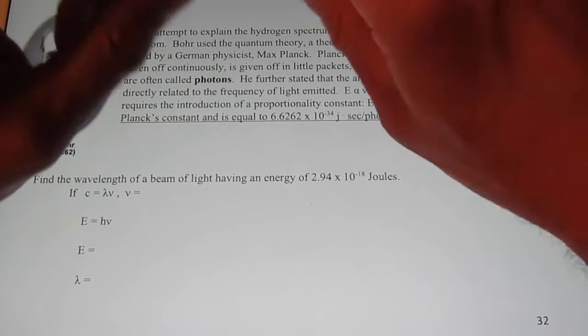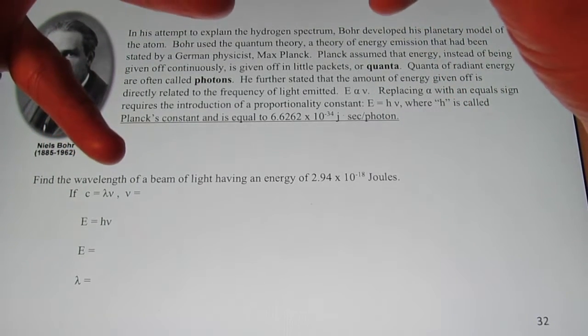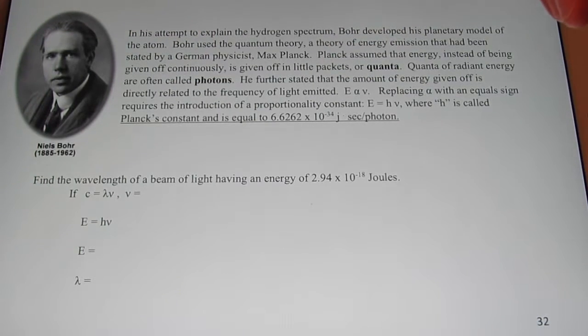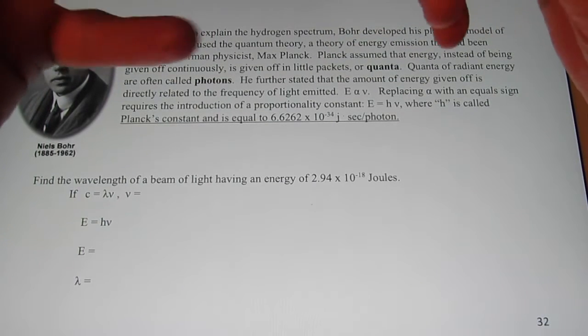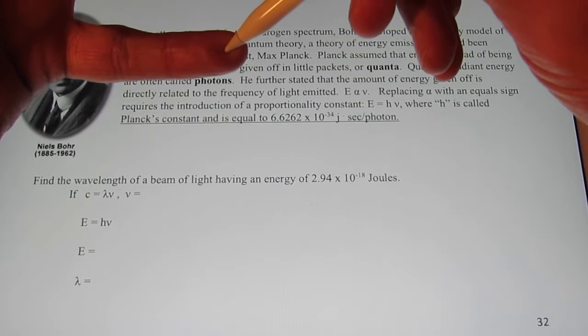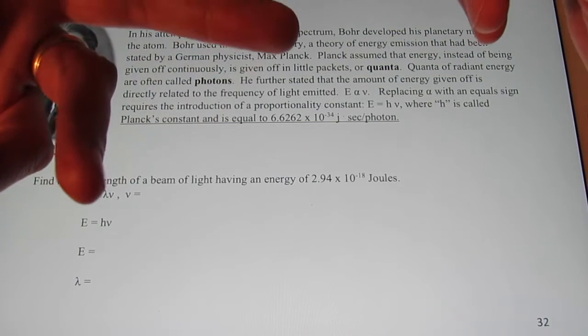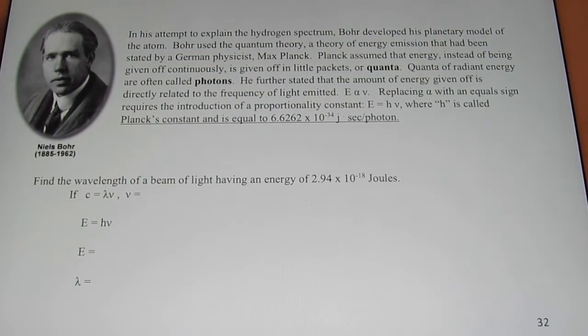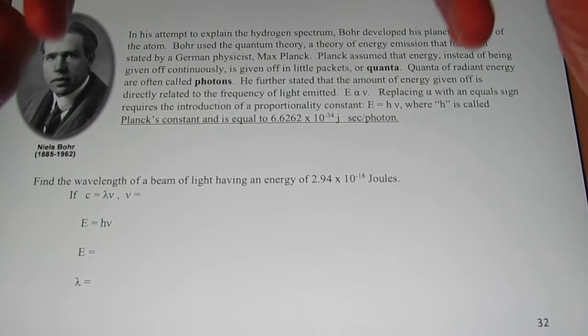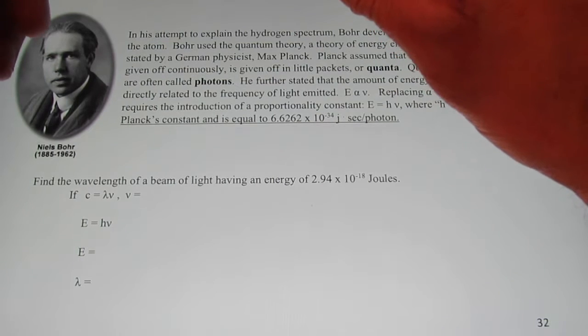Alright, kiddos, we are back! We have been talking about some properties of light. Actually, all electromagnetic radiation. We've described it in terms of the wavelength, the frequency, and the velocity at which all electromagnetic radiation travels. You should be familiar with how to do those calculations.